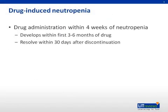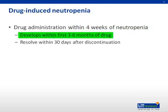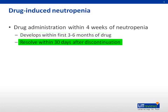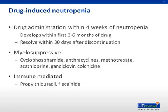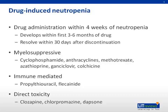Drug-induced neutropenia requires the offending drug to be administered within four weeks of the development of neutropenia. However, it typically develops within the first three to six months of drug administration and resolves 30 days after discontinuation of the offending agent. Drugs can cause neutropenia in many ways. The first and most obvious form is myelosuppressive drugs, where chemotherapy such as cyclophosphamide or anthracyclines exert a direct effect on the bone marrow and impair production of neutrophils. This can also be seen with immunosuppressants such as azathioprine, antivirals such as ganciclovir, or rheumatologics such as colchicine. Immune-mediated destruction of neutrophils can also occur, such as with thyroid medications like propylthiouracil, or with direct toxicity to neutrophils from a metabolite of drugs such as clozapine.